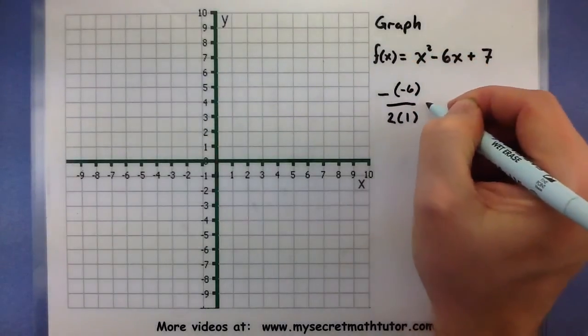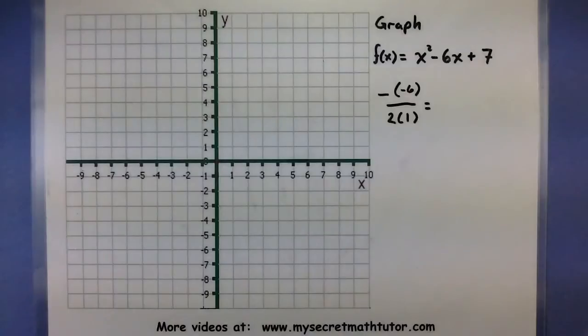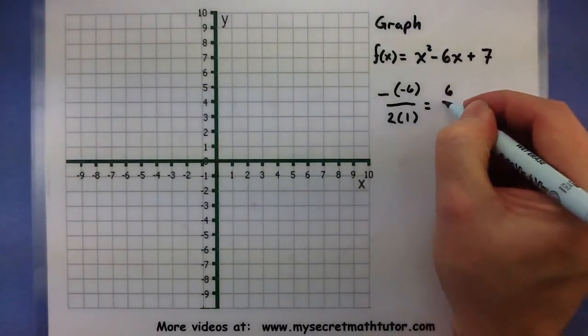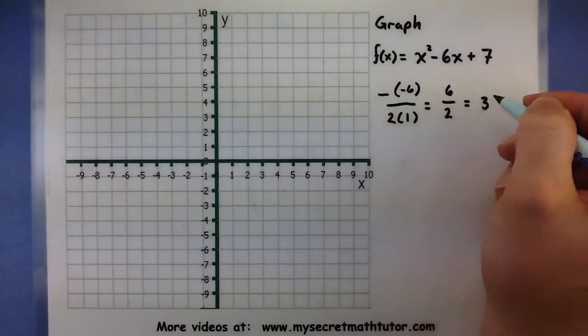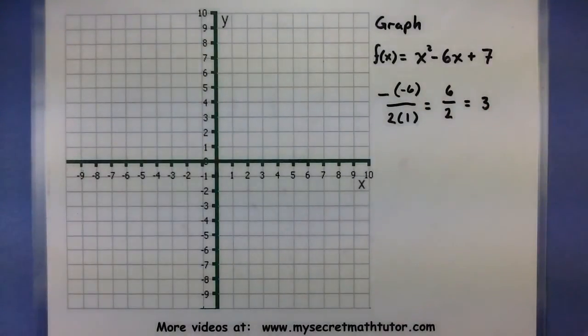I can see a couple of negative signs will cancel each other out. I have a 2 on the bottom, and then I have 3. So that tells me that the x-coordinate is 3.